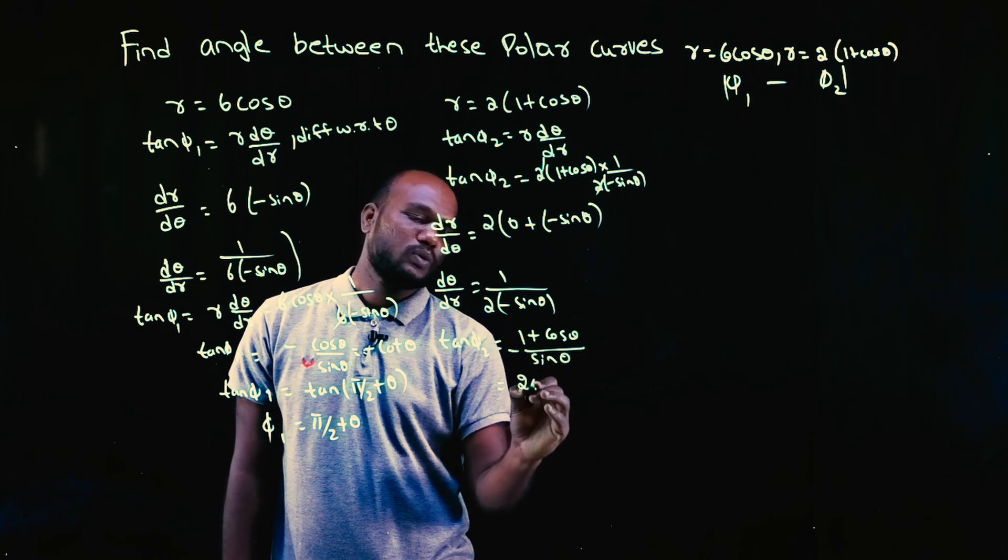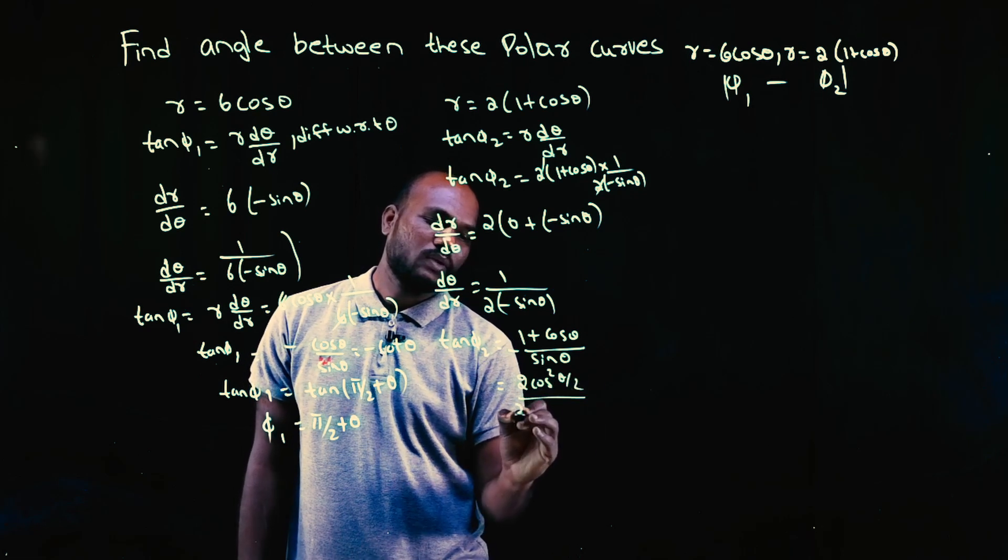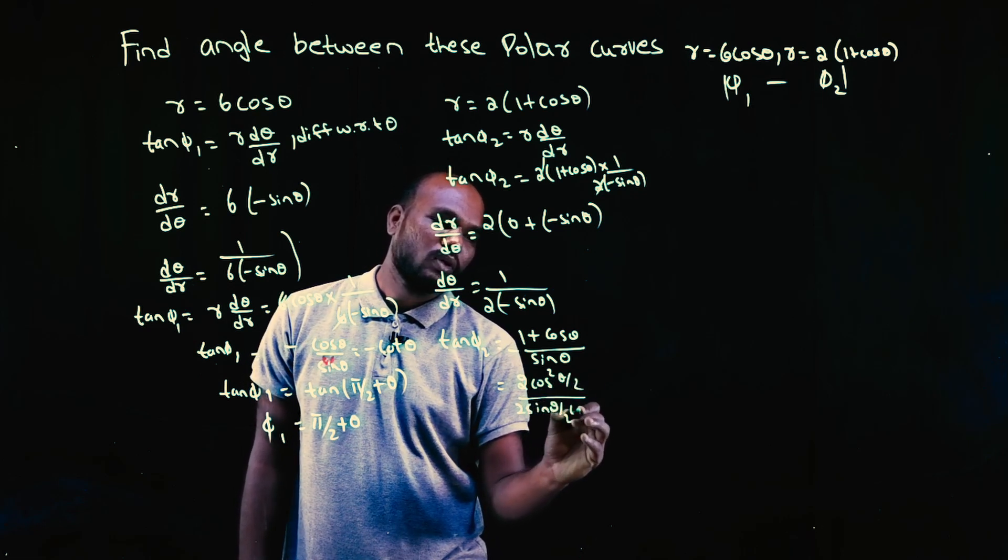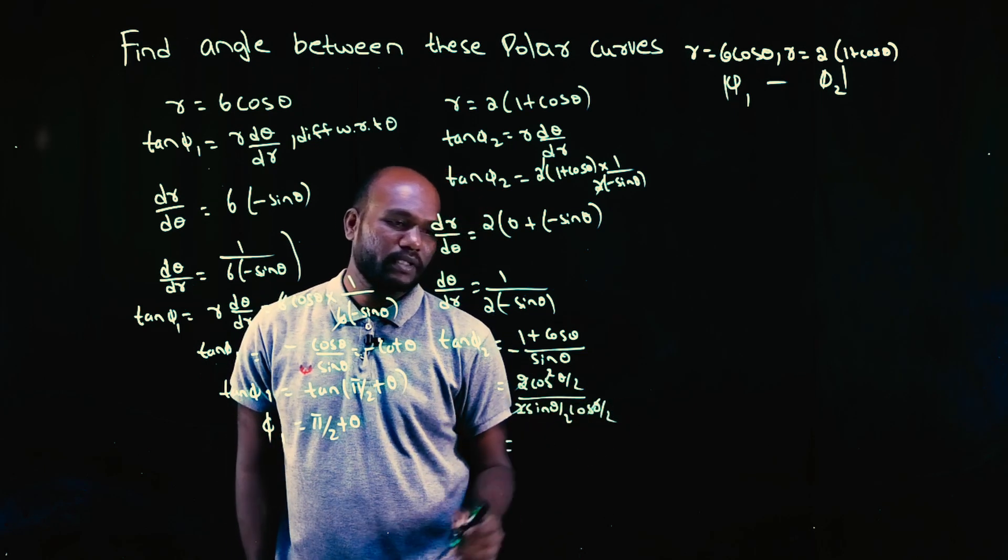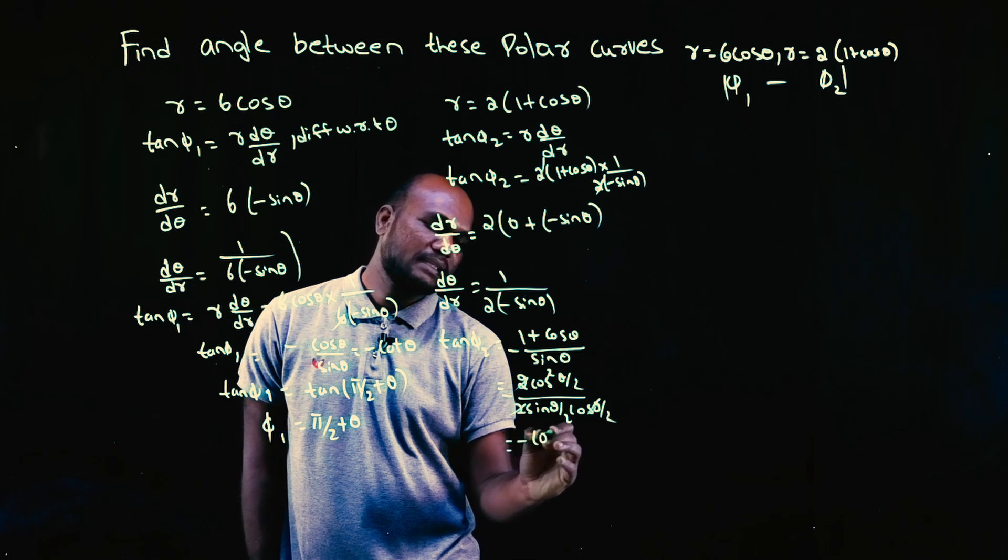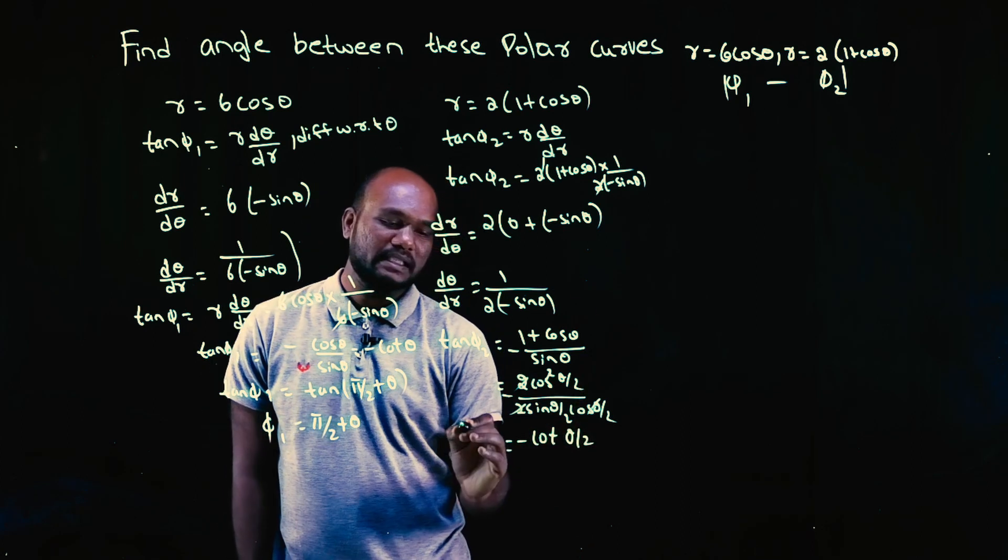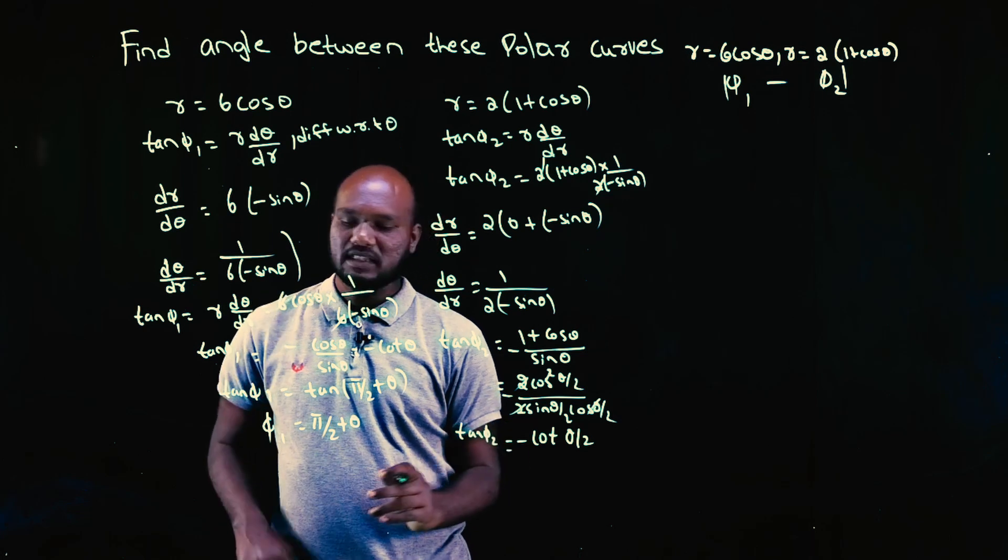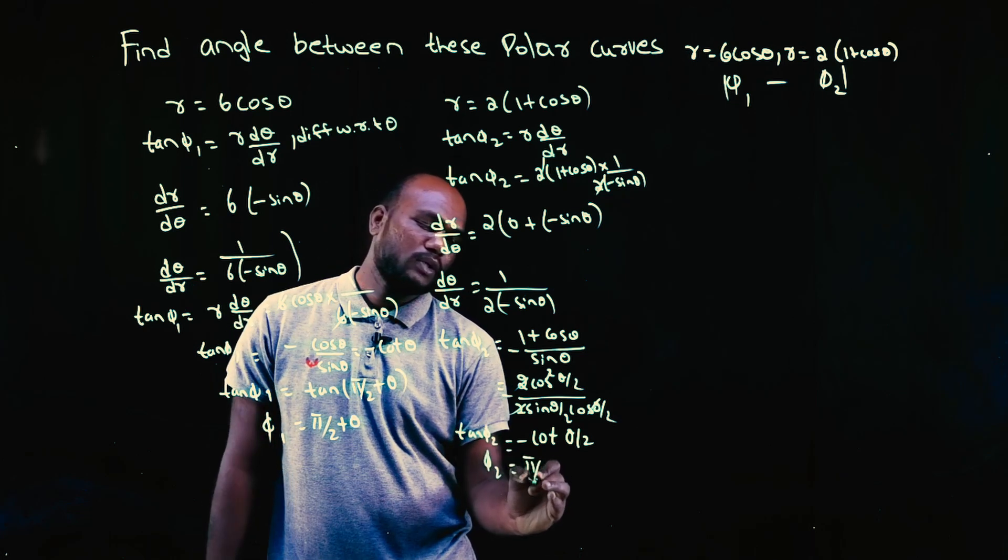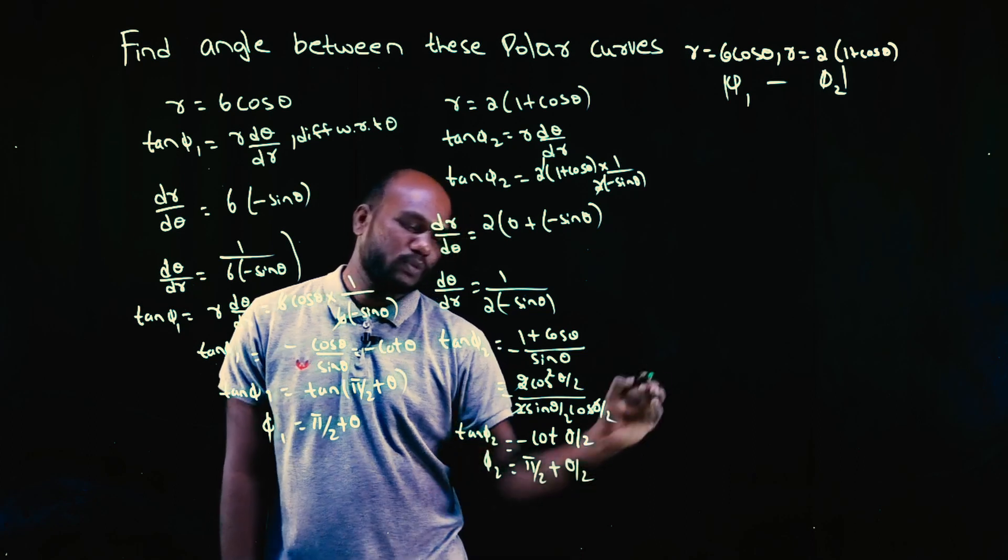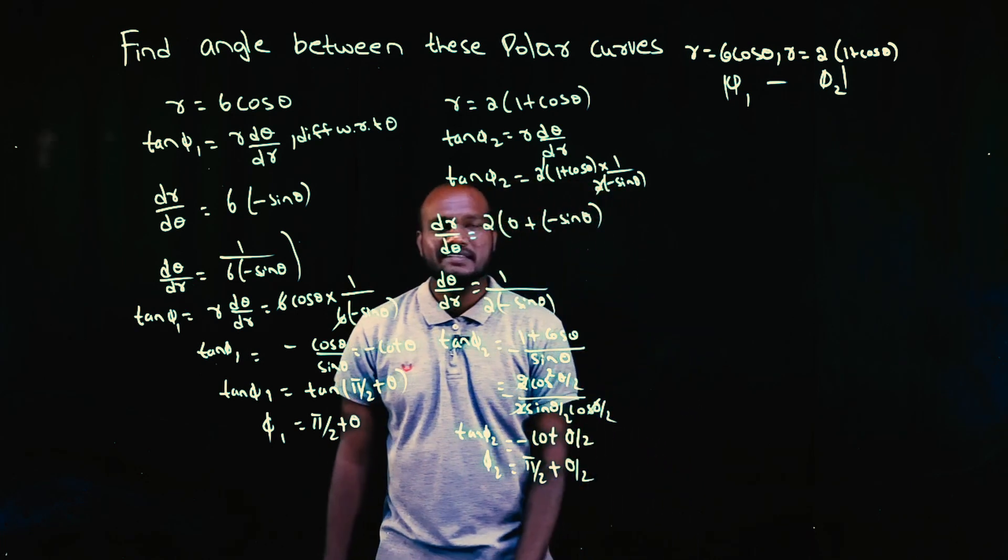I am left with tan φ2 is equal to 1 plus cos θ divided by minus sin θ. 1 plus cos θ, 2 cos square θ/2, divided by sin θ, 2 sin θ/2 cos θ/2. 2 can be taken out, cos can be taken out. So, minus is there minus cot θ/2. This is tan φ2. If you just look at the same case, φ2 can be directly written as π/2 plus θ/2.